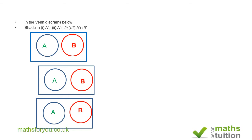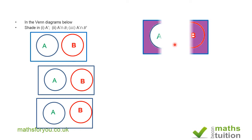Now it says to shade regions in the Venn diagrams below. For the first one we want A prime — in other words, we want to shade everything not in A. That means everything around A in the universal set, which includes B as well. So A prime is all of that region shaded.